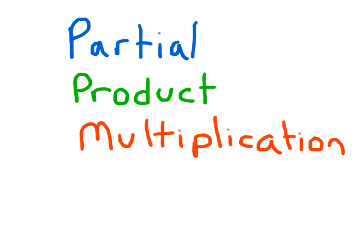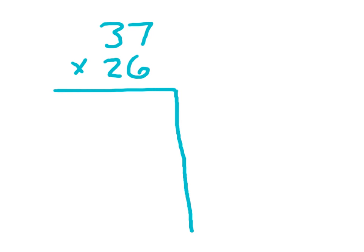We're going to look at the partial product multiplication strategy. With the partial product multiplication strategy, we're going to look at each of those factors, break down each of those factors into their parts, and then write them in their expanded form.